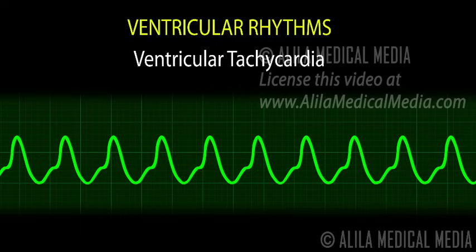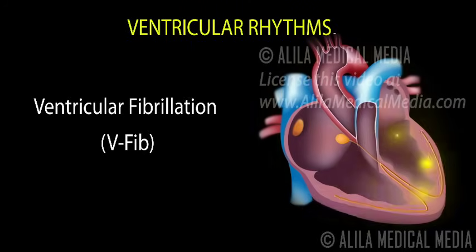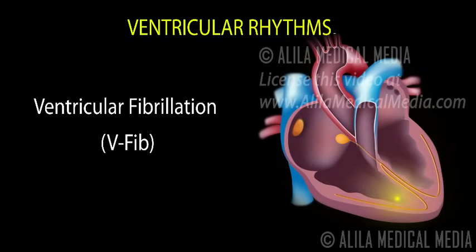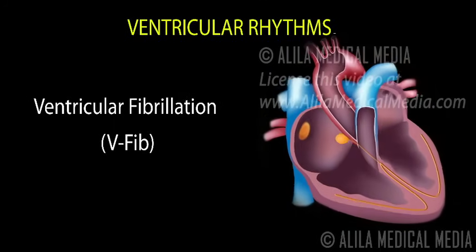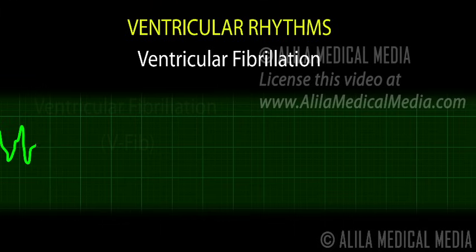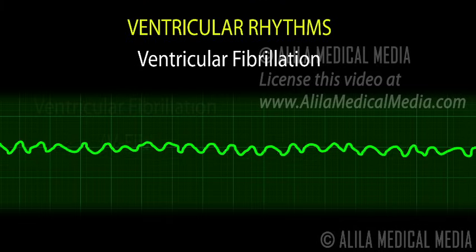Ventricular tachycardia may also progress into ventricular fibrillation. Ventricular fibrillation, or V-fib, is caused by multiple weak ectopic sites in the ventricles. These unsynchronized, chaotic electrical signals cause the ventricles to quiver or fibrillate rather than contract. The heart pumps little or no blood. V-fib can quickly lead to cardiac arrest. V-fib ECG is characterized by irregular random waveforms of varying amplitude with no identifiable P wave, QRS complex, or T wave. Amplitude decreases with time from initial coarse V-fib to fine V-fib and ultimately to flatline.